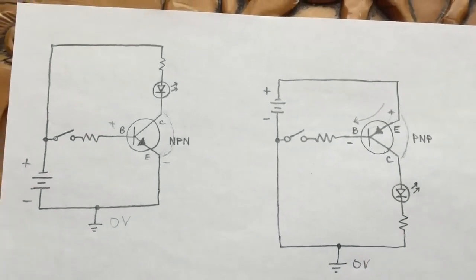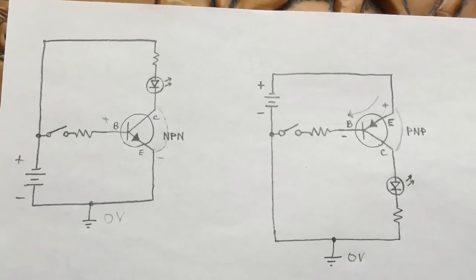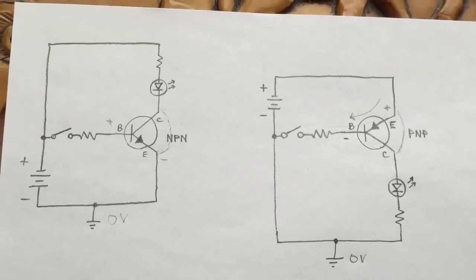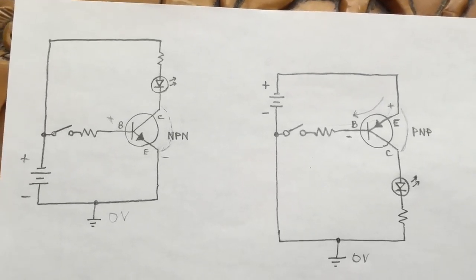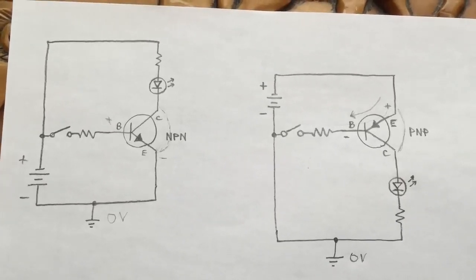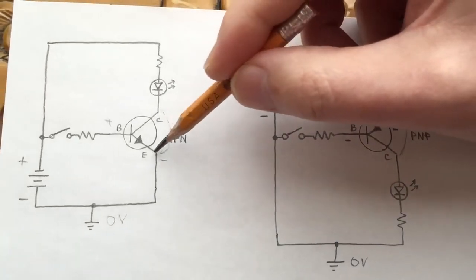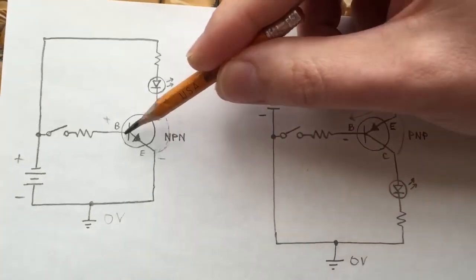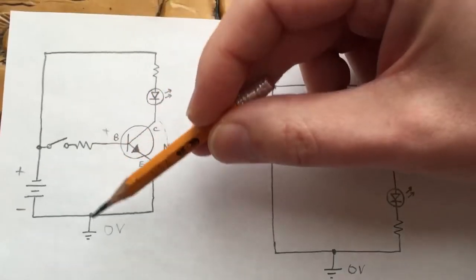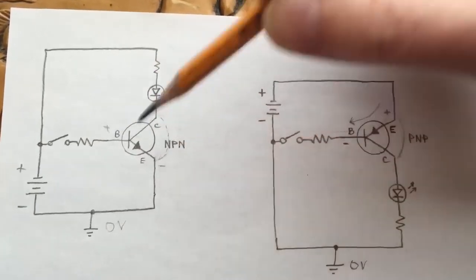NPN and PNP transistors are complementary — they can be used in different situations. Sometimes you want to switch the negative terminal, sometimes the positive terminal, and you can find parts with very similar voltage and current handling specifications. NPN transistors are more common because it's convenient to have the emitter tied to ground so the control signal is always relative to ground.